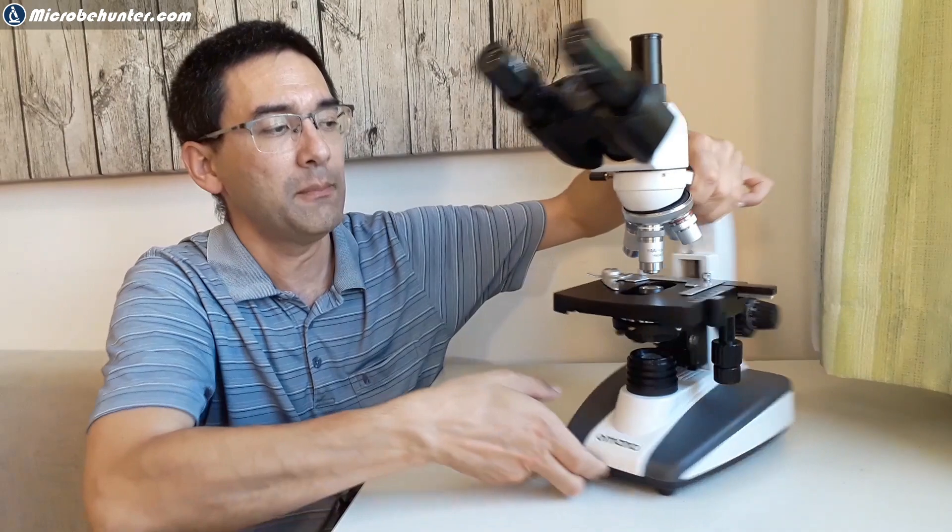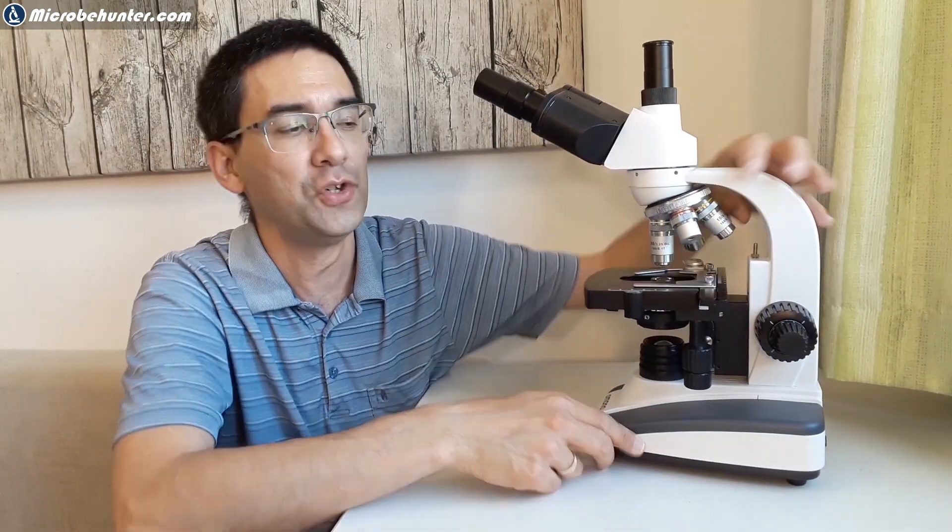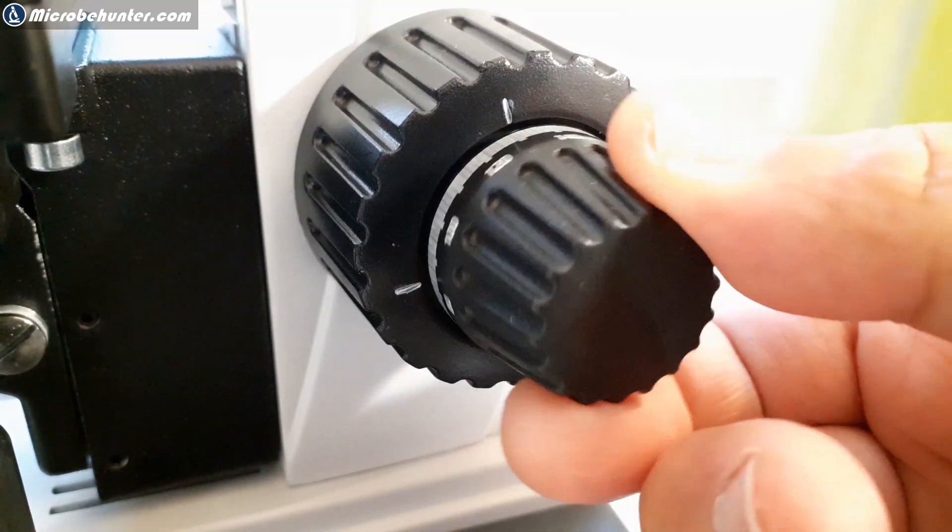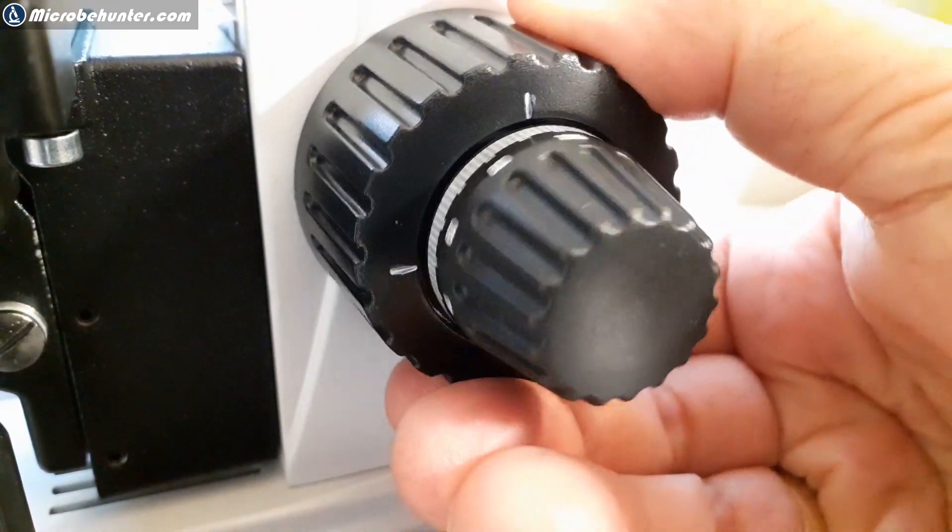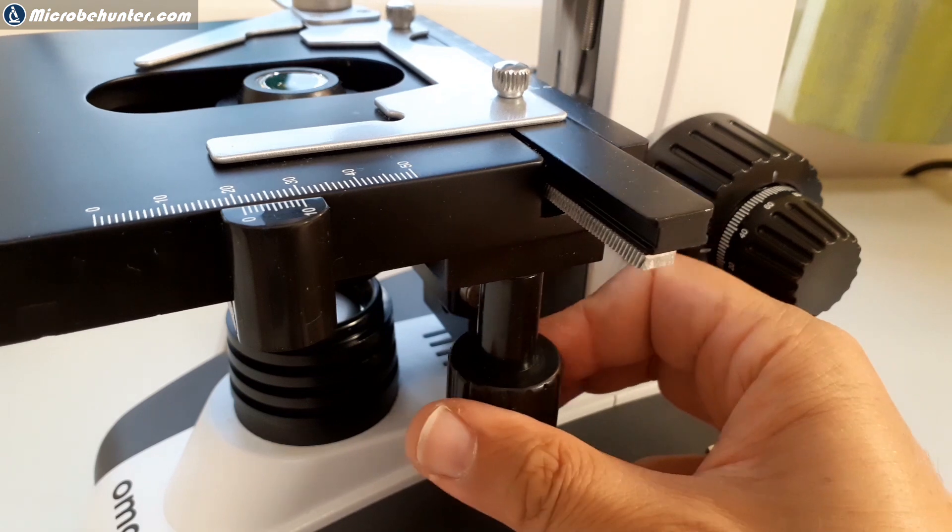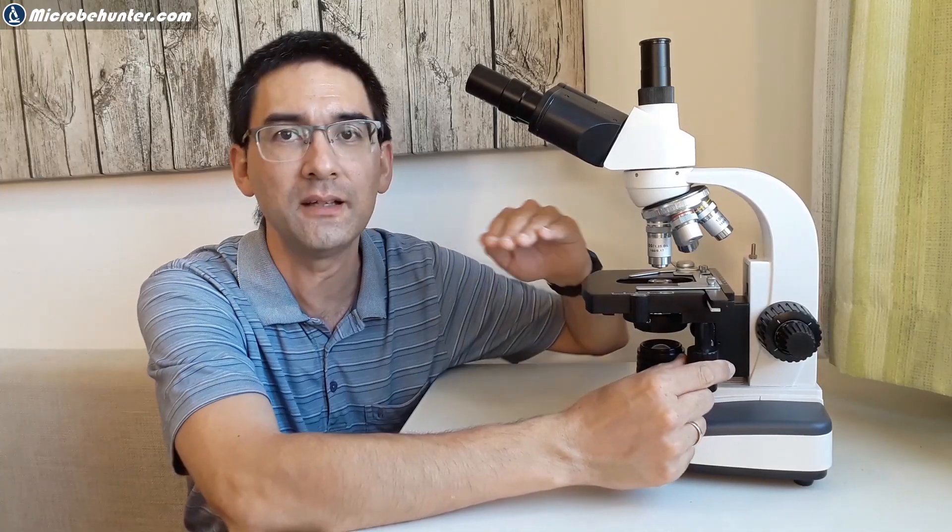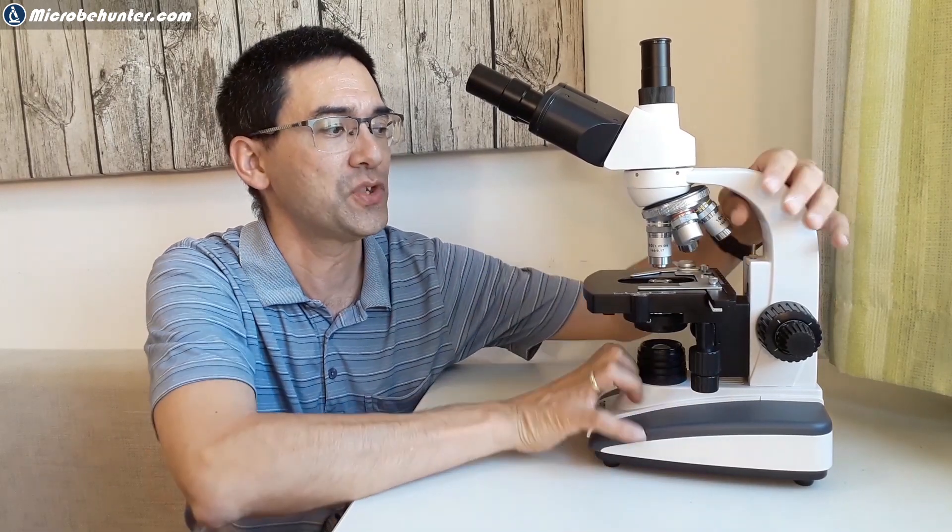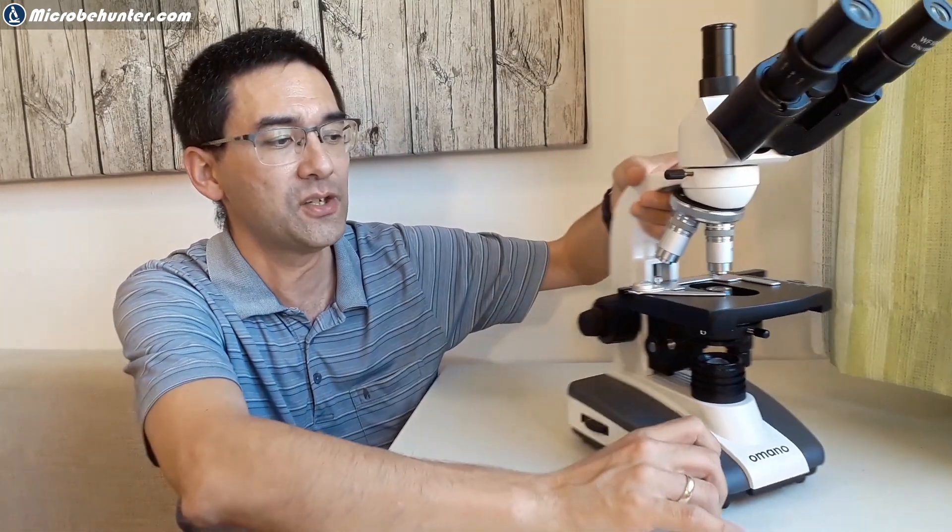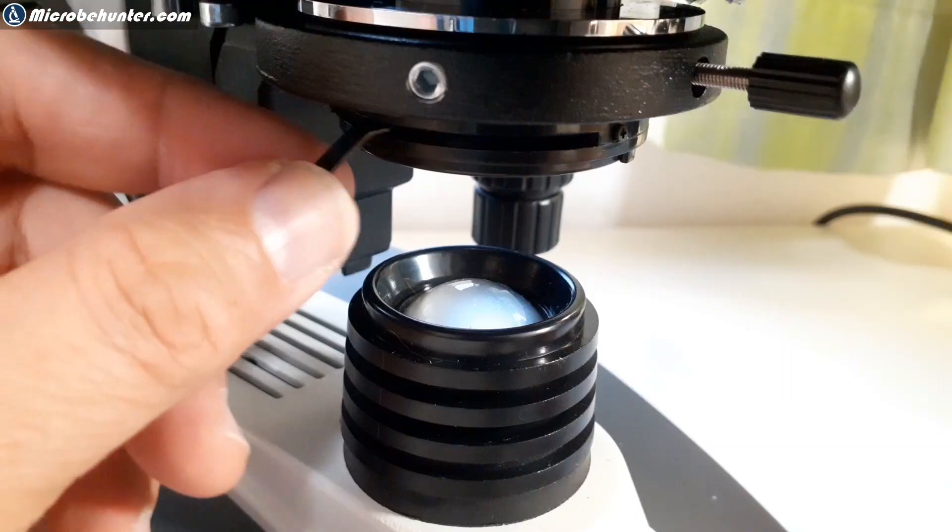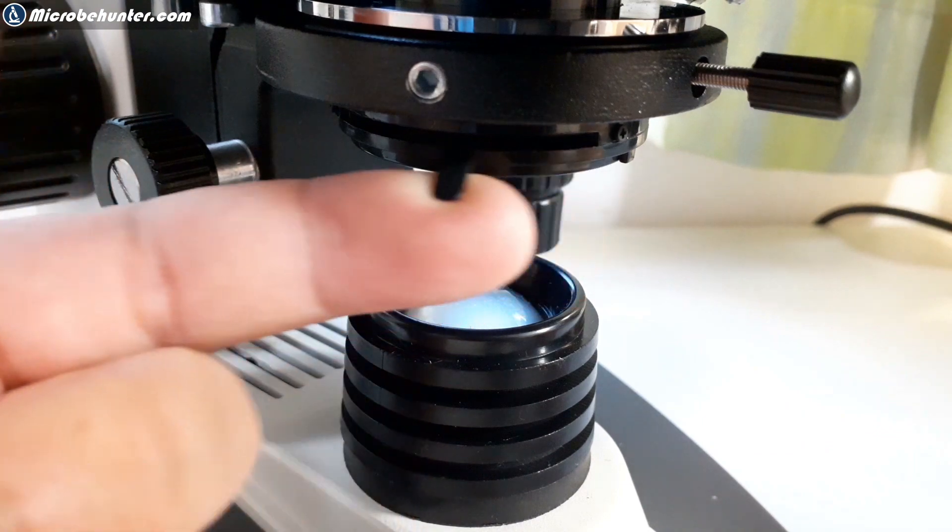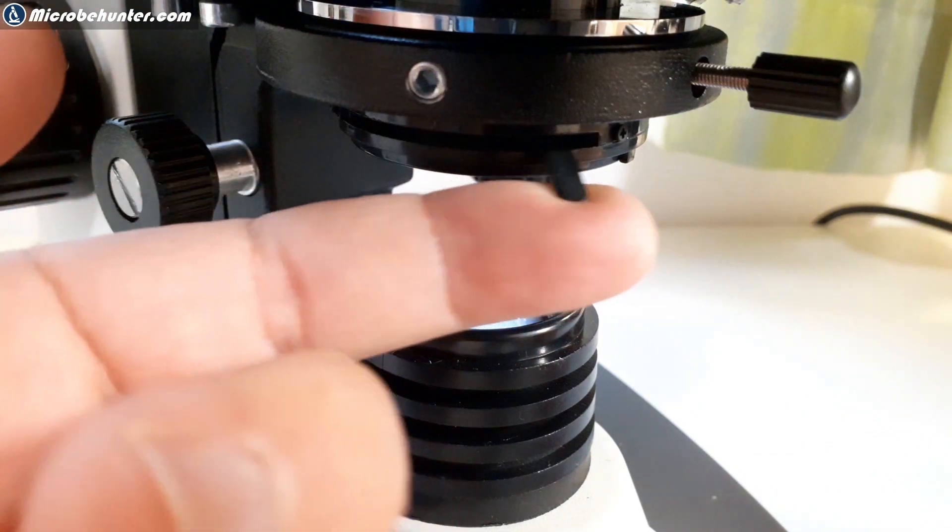The microscope of course also has a coarse and a fine focus knob, that's pretty much standard these days in compound microscopes. It has also a mechanical stage which allows you to move the specimen slider into the x and the y direction and of course there is also a condenser which can be opened and closed by moving the condenser aperture diaphragm here and the condenser can also be raised and lowered by turning this wheel here.